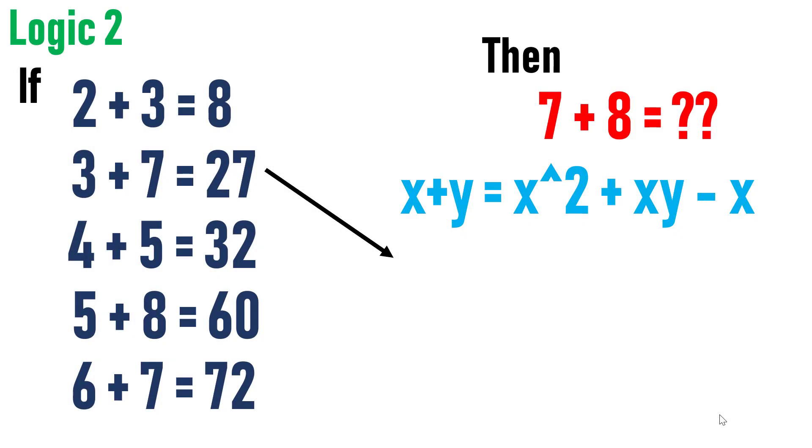Consider second equation. Consider the second equation. Square of first number is 9 plus product of two numbers is 21 minus first number is 3, which will yield 27.